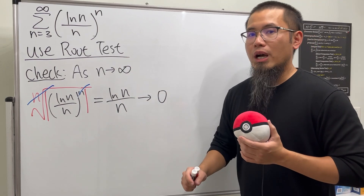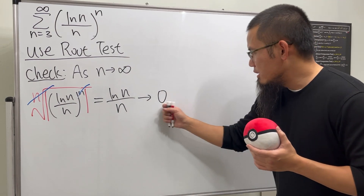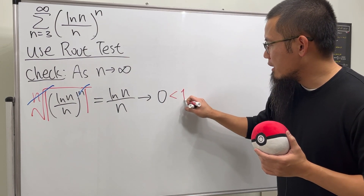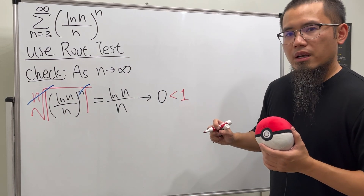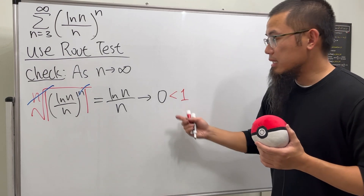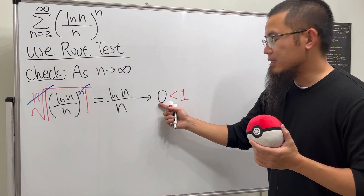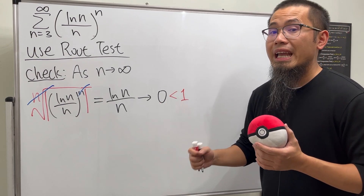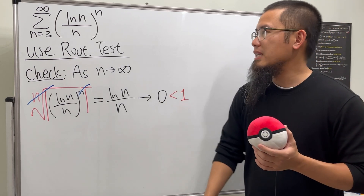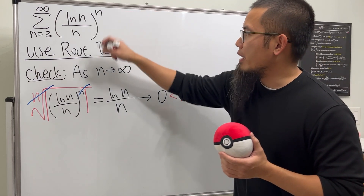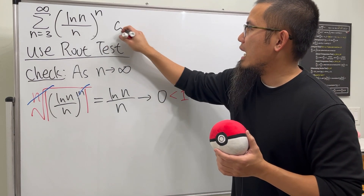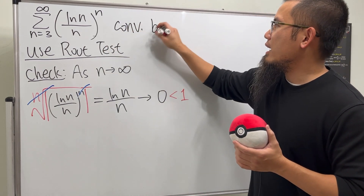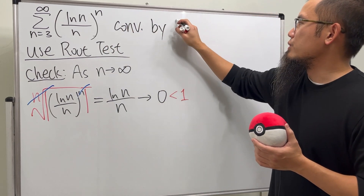For the root test, zero is less than one, and since the limit is less than one, we conclude this series converges by the root test.